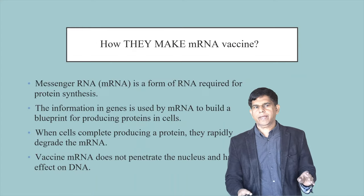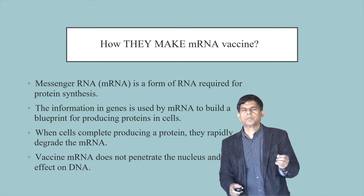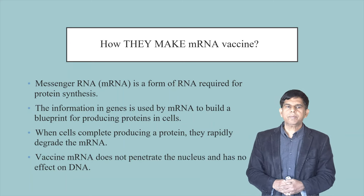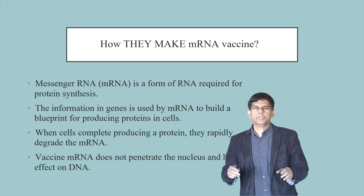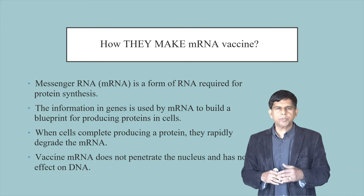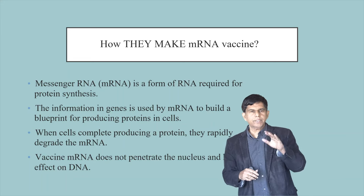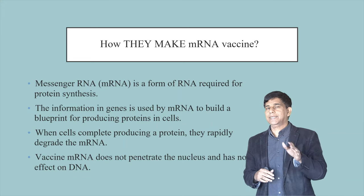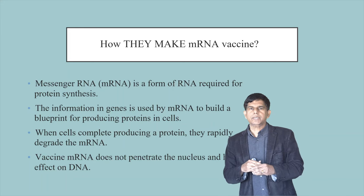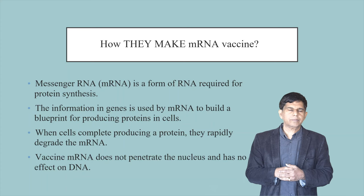Let's look at how they make this mRNA vaccine. mRNA is a form of RNA required for protein synthesis — the information from genes is used to build a blueprint for producing a protein. After the protein is produced, the mRNA is happily degraded. One important thing to understand: this vaccine mRNA does not penetrate the nucleus, so DNA is not affected. A lot of people think it can affect their DNA, but it cannot.